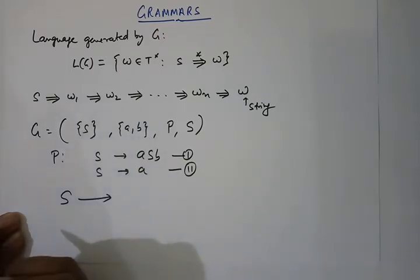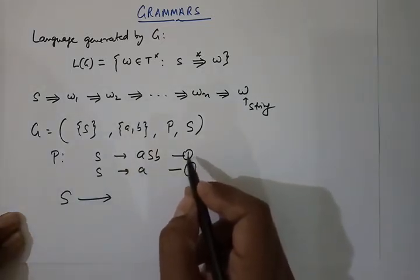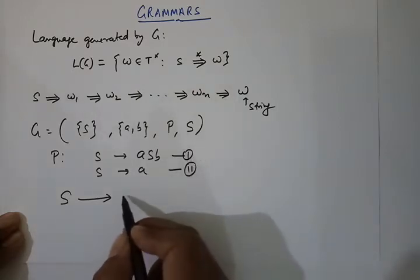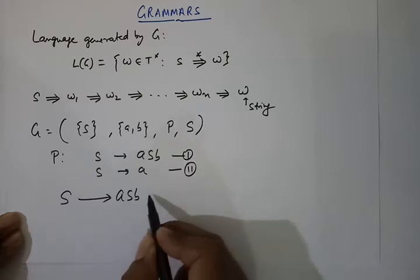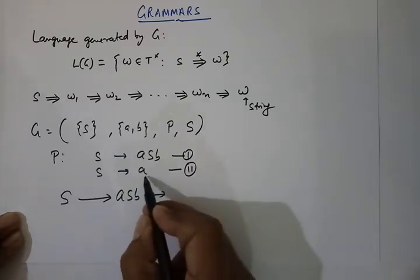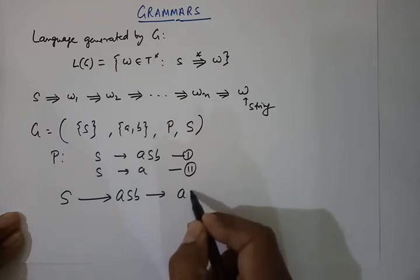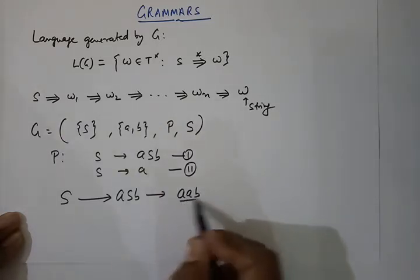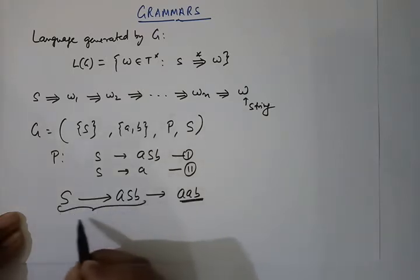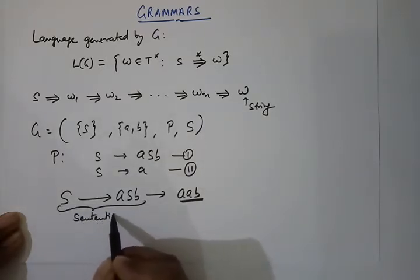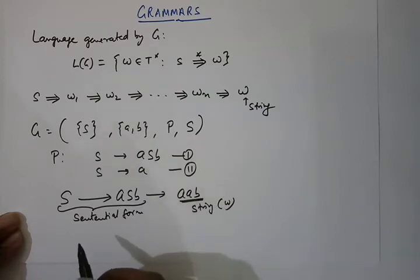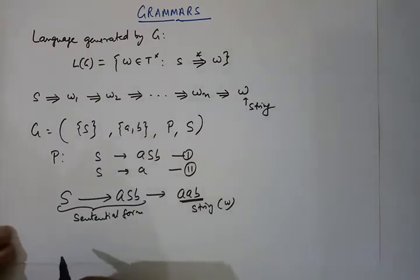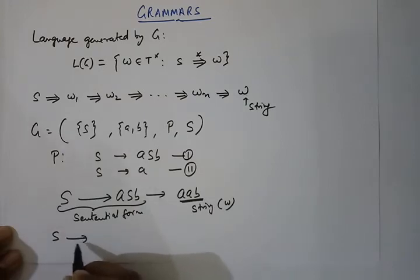We try to derive a string from these production rules, starting from the start symbol S. We apply production rule number one to get ASB. This is not a string — it is a sentential form because it contains the variable capital S. We then apply production rule two to S, giving AAB, which is now a string.